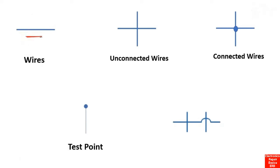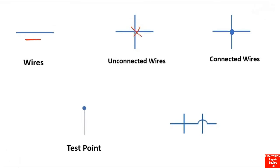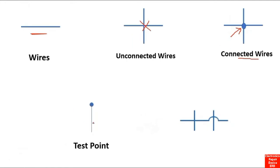Let's look at some basic electrical, electronic, and logical schematic symbols. This first example is a simple wire. The second example shows unconnected wires — two wires with no dot at the junction. In this third example, we have a dot at the crossing, which means the wires are connected. Two wires joined by a dot are connected wires.